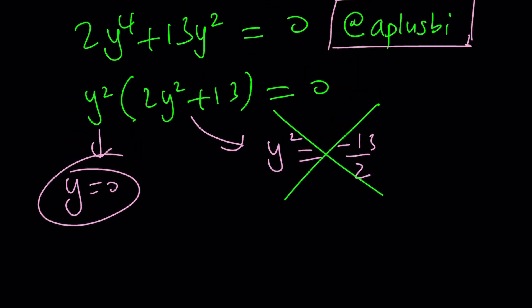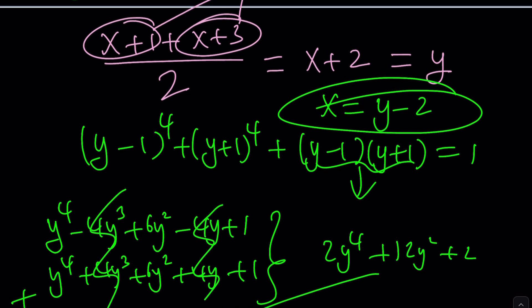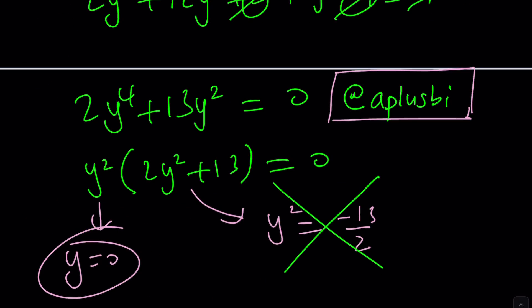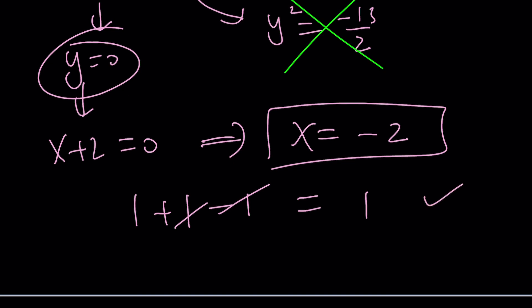So y equals 0 gives us something nice because what is y? Y is (x+2). Nice. So let's replace y with (x+2). We're going to get x equals negative 2 as a solution. And you can definitely check it out. Like if x is negative 2, you're going to get (-2+1) to the fourth, which is 1. (-2+3) to the fourth, which is 1. And then (-2+1) is negative 1 and positive 1 is going to give you negative 1. They're going to cancel out giving you 1. So it checks.